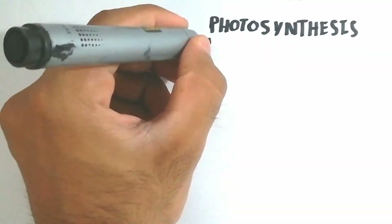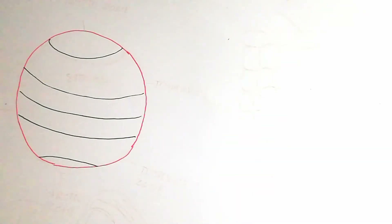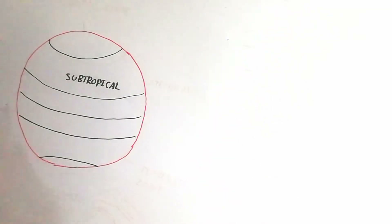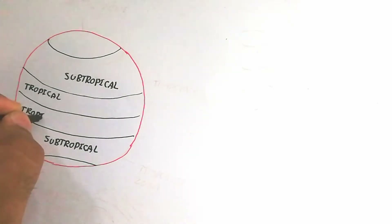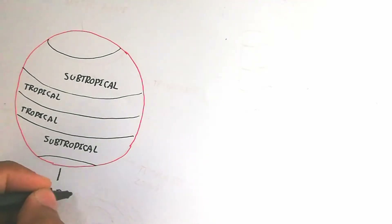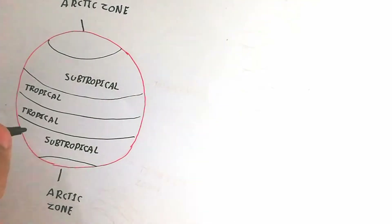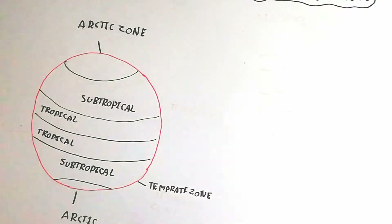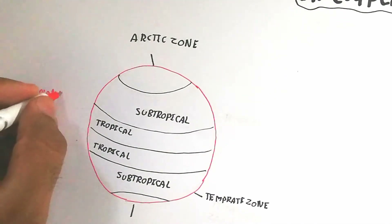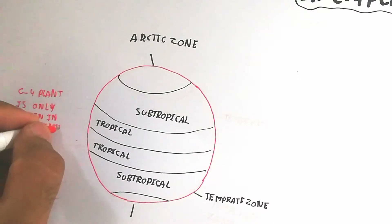Photosynthesis in C4 plants is due to the four-carbon compound present, as compared to the three-carbon compound in the Calvin cycle. C4 plants are found in tropical and subtropical regions where light falls at a vertical angle, producing too much heat. The hot weather in these regions is why plants use the C4 cycle, converting carbon dioxide into a C4 compound.